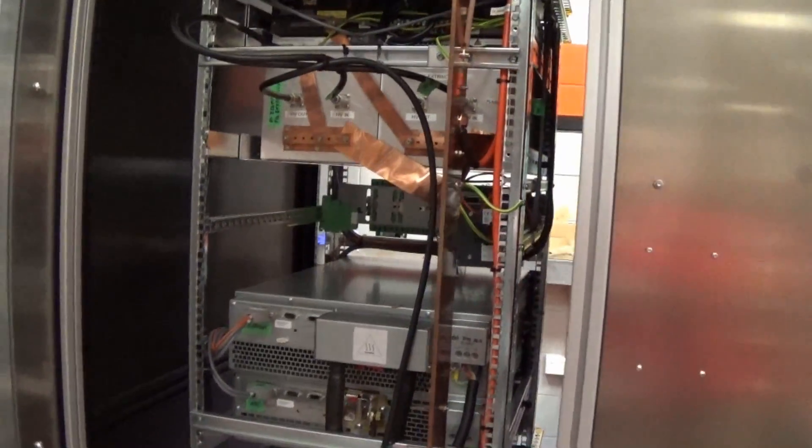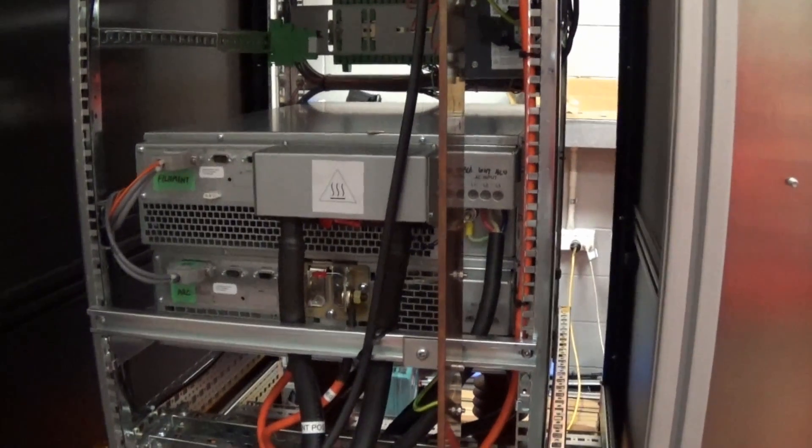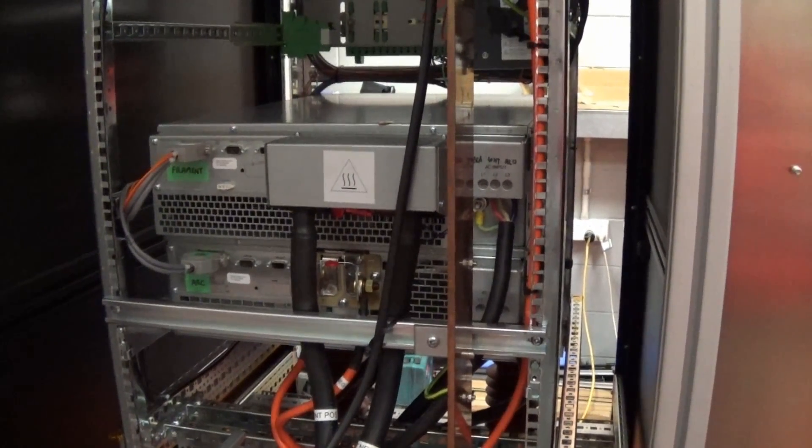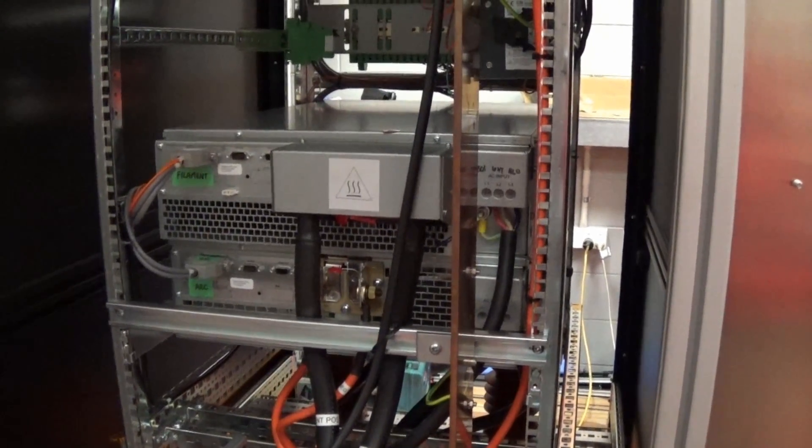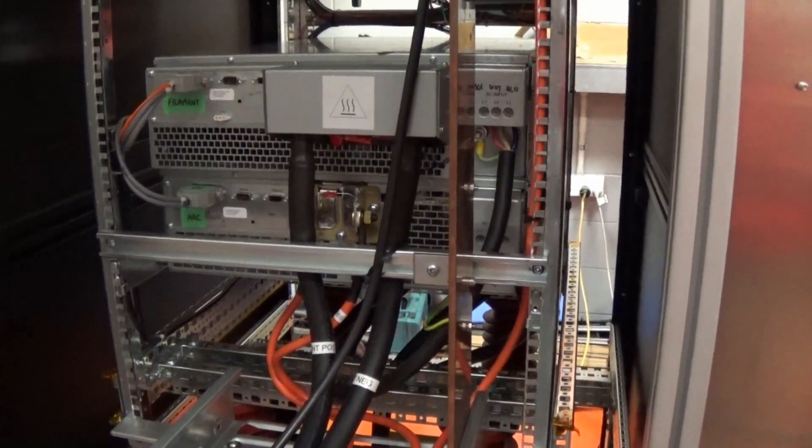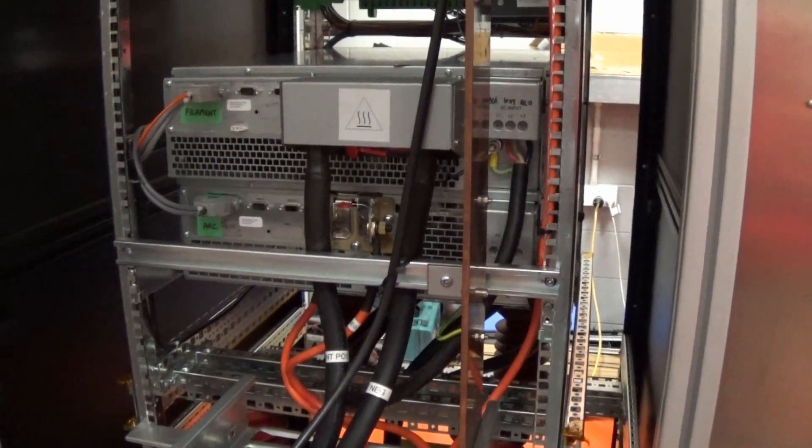And then it runs down and through this tray and into the back here. And what we've got back here is down here are two high powered power supplies. You can see the two thick cables going into the upper power supply. That supplies the 400 amps for the filament. Just below that is another power supply that's 50 amps, 200 volts. And it provides the current for the arc.